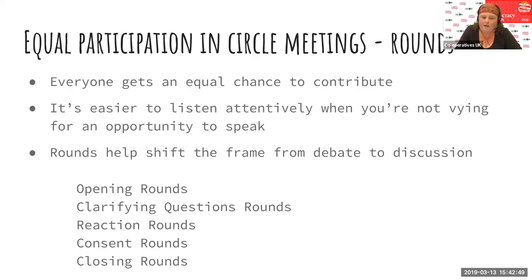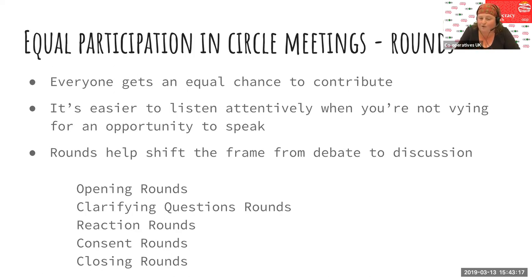Something important to know about sociocracy early on is that in circle working, there's this emphasis on equal participation, which is crucial to how it all works. That's usually speaking in rounds — everybody gets an equal chance to speak. That makes it easier to listen and pay attention to what you're trying to decide, because you're not waiting for your turn. You know it's going to come back to you and you can relax into the meeting. Those of us who've been doing this for a little while at Unicorn have really enjoyed that.